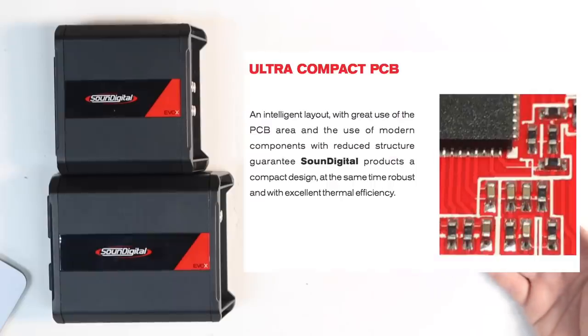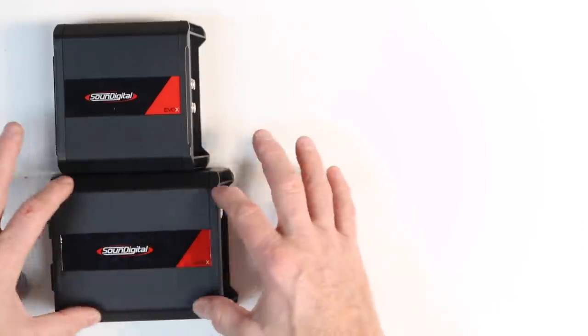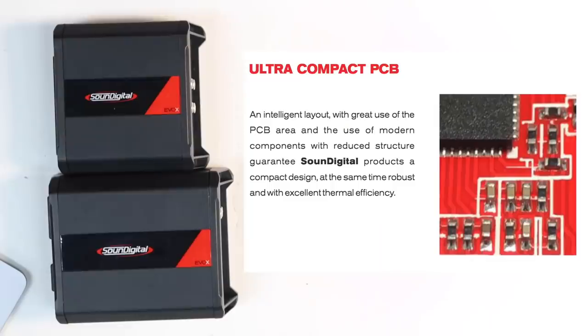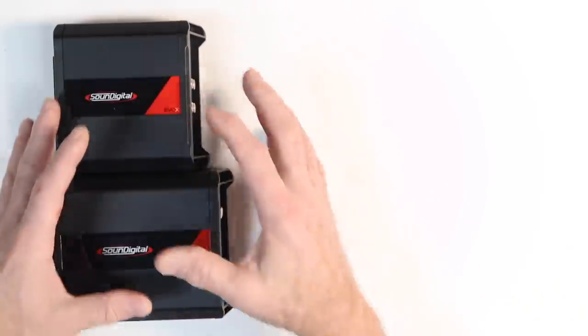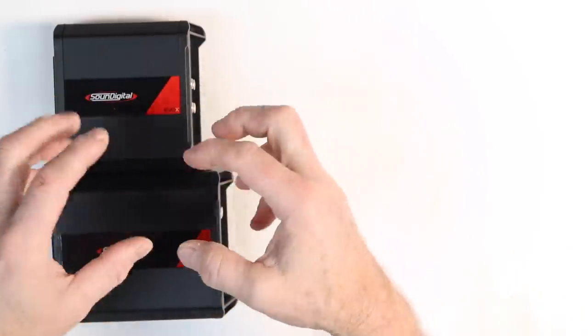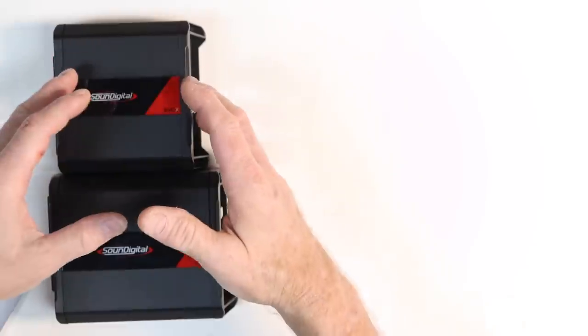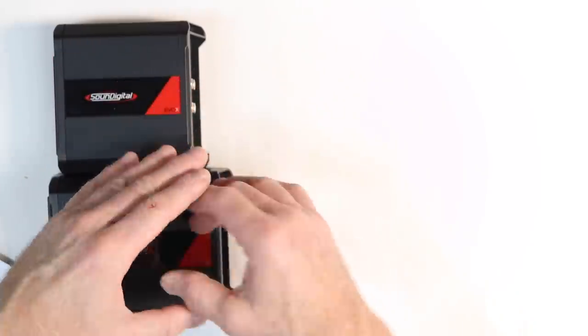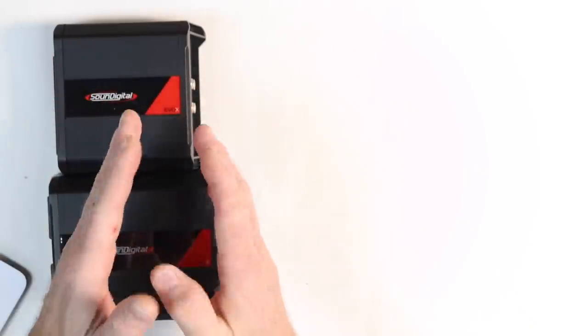Next, ultra-compact PCBs. The circuit boards that are inside of these. An intelligent layout with great use of area and use of modern components with reduced structure guarantees Sound Digital's products a compact design at the same time robust and with excellent thermal efficiency. Basically what they're saying is that these amplifiers are designed in-house specifically this size to do what they do and they're maximized to their greatest potential.